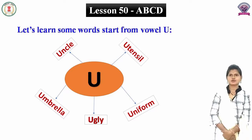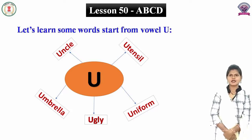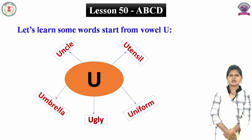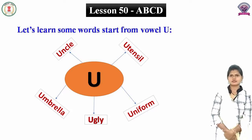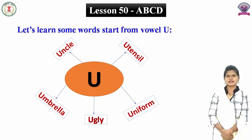Woh U se shuru hone wale kuch shabd jaanenge. Chaliye dekhte hain. U se uncle. Uncle means mama ya phir chacha. Mama ya chacha ko hain uncle bolte hain. U se utensil. Utensil means bartan. U se uniform. Uniform means vardi. U se ugly. Ugly means badsorat. U se umbrella. Umbrella means chata.